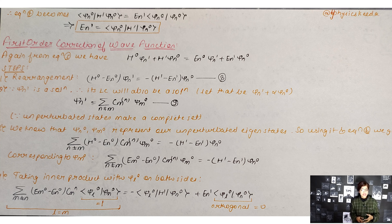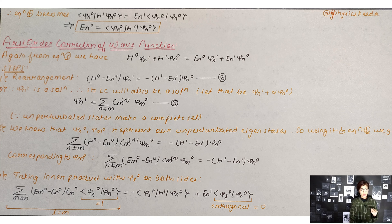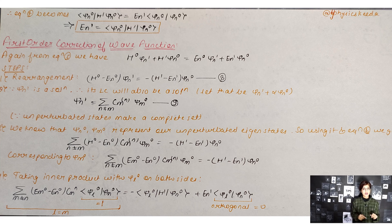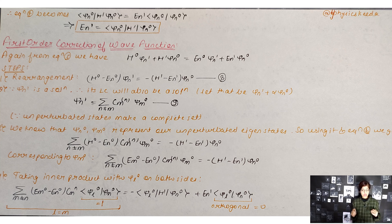Since the unperturbed wave functions form a complete set, any wave function — including ψ_m1 — can be expressed as a linear combination of them. So we write ψ_m1 = Σ (n≠m) C_mn ψ_n0, where C_mn are constants. We already know that ψ_m0 and ψ_n0 are unperturbed eigenstates, so they must satisfy the eigenvalue equation.